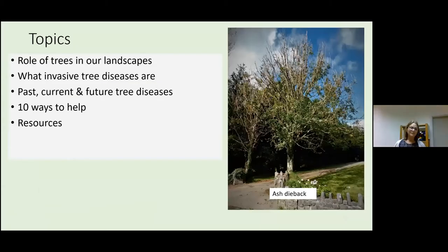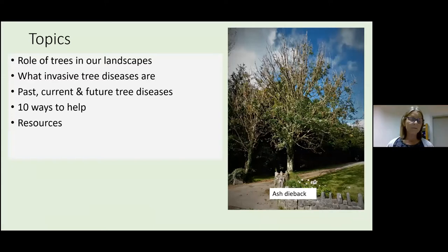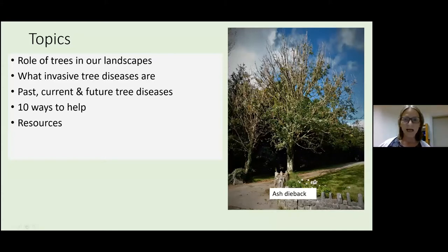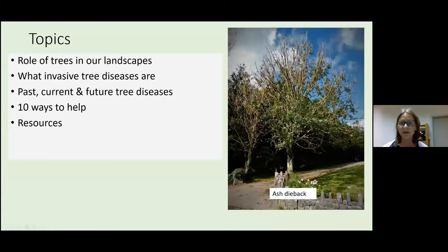I'm going to cover four main topics this evening: first, the role of trees in our landscapes; then what invasive tree diseases are; a few examples of past, current, and potential future tree diseases; and ways by which we can help. Someone in the audience asked this morning about how to identify ash dieback — this tree here is a good example. At this time of year, when ash trees are infected, you can see bare tips, and here the whole canopy has no leaves.